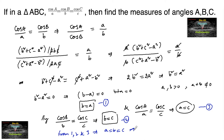If all three sides are equal, the triangle ABC is an equilateral triangle. Therefore angle A, angle B, and angle C are all equal to 60 degrees.